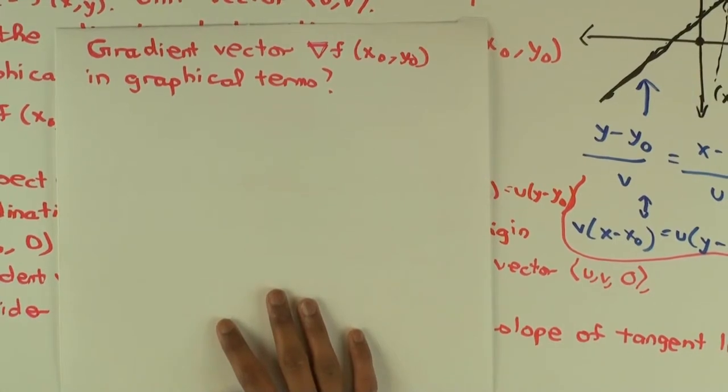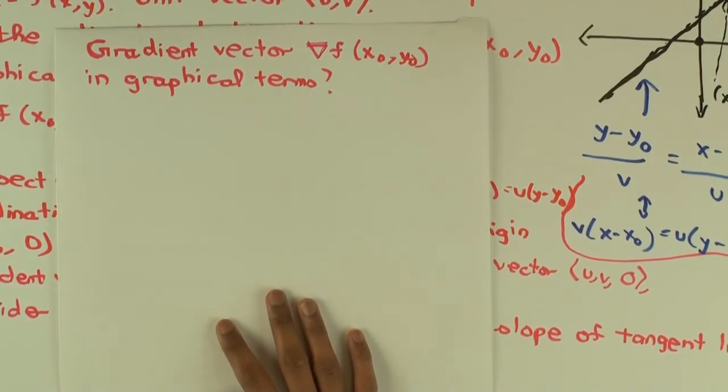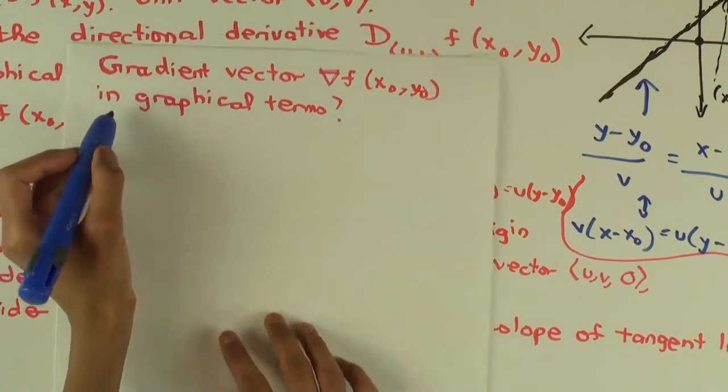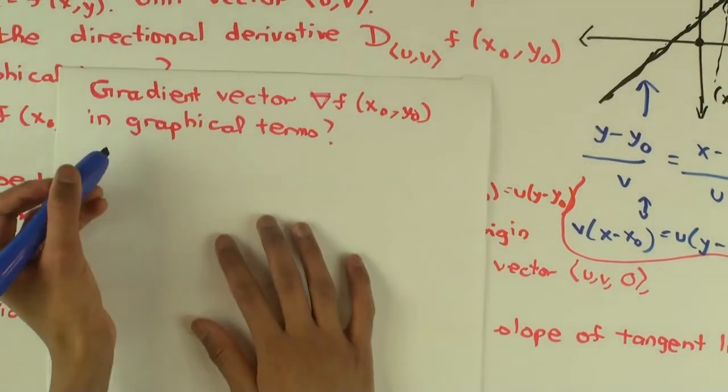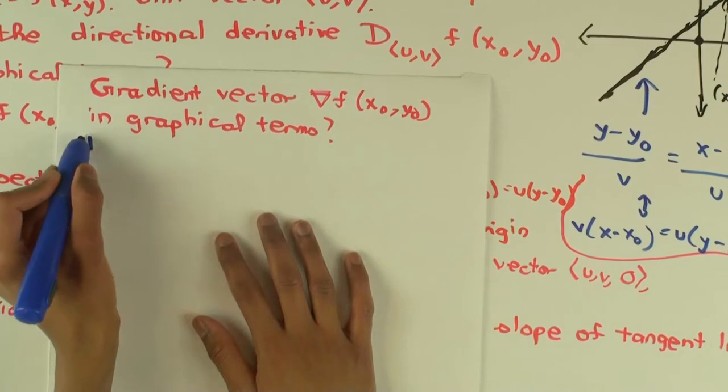You want to define it as a limit of a difference quotient, but you cannot do that because you have a vector, so you have to go back to the epsilon-delta definition, which we don't want to do. But there's one nice thing about the gradient vector which we can use here, and that's the relation between the gradient vector and directional derivative. So what's the relation?